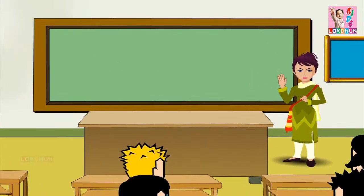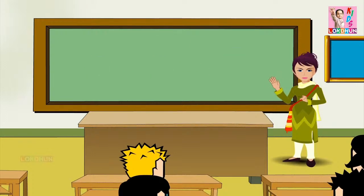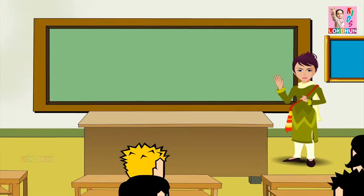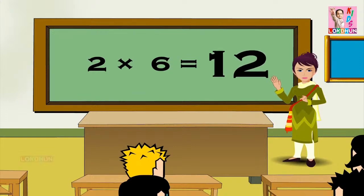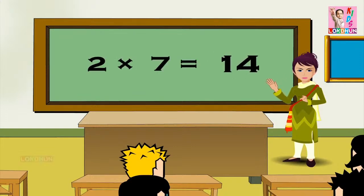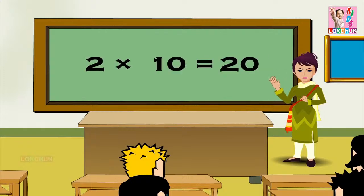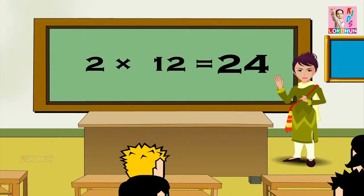2 1s are 2, 2 2s are 4, 2 3s are 6, 2 4s are 8, 2 5s are 10, 2 6s are 12, 2 7s are 14, 2 8s are 16, 2 9s are 18, 2 10s are 20, 2 11s are 22, and 2 12s are 24.